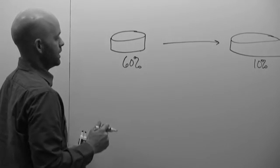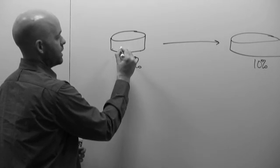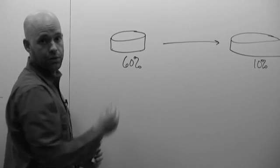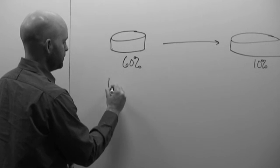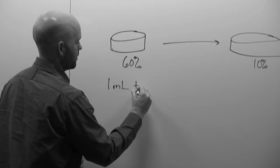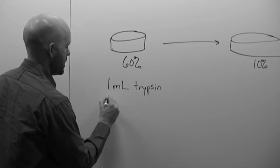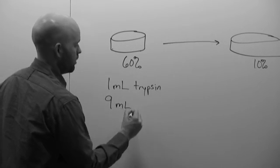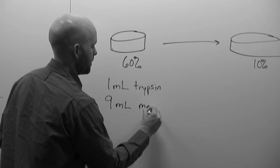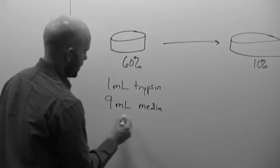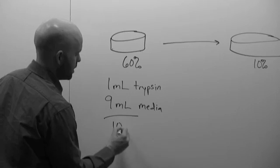So the easiest way to do this is to resuspend, trypsinize your cells in 1 mil, and then quench your trypsin with 9 mils of your growth media. This gives you a total of 10 mils of cells.